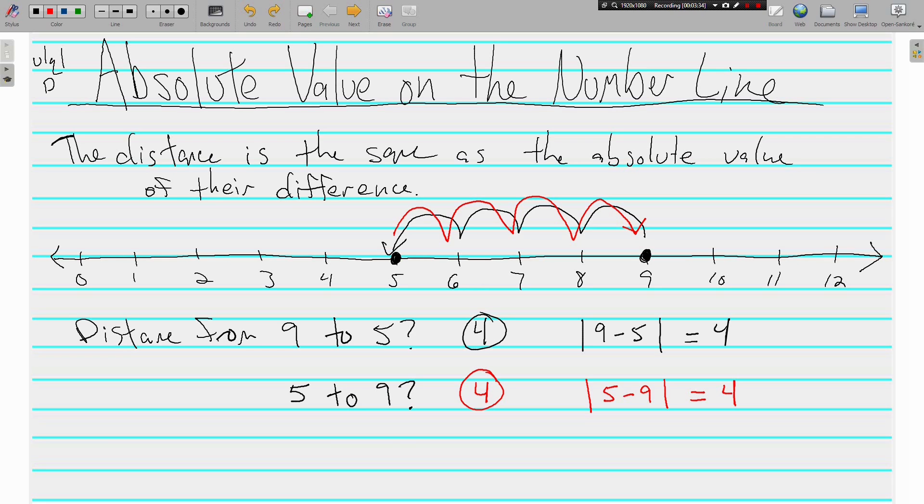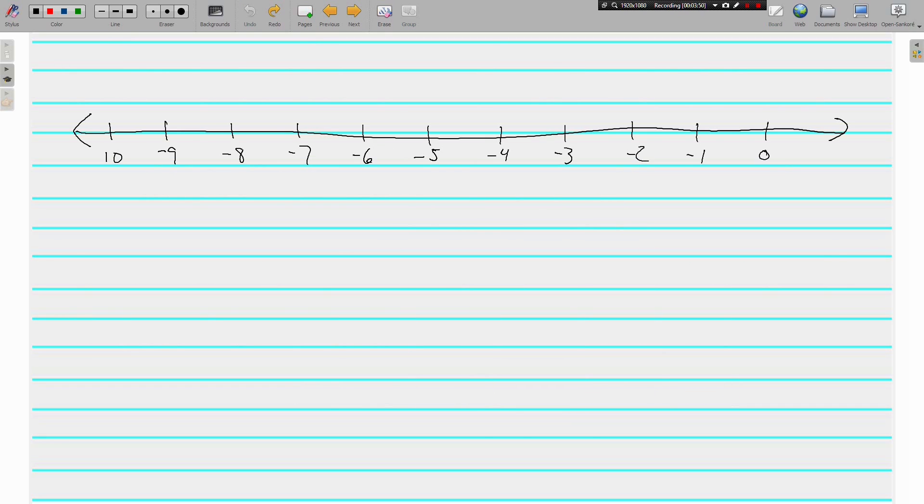Kind of confusing when you use your words to explain what's going on, but obviously it's something that's not too difficult as far as the math goes. Let's look at another example. We've got a little different number line here. This one goes from negative 10 to 0. I'm going to put a dot on negative 7 and on negative 2.